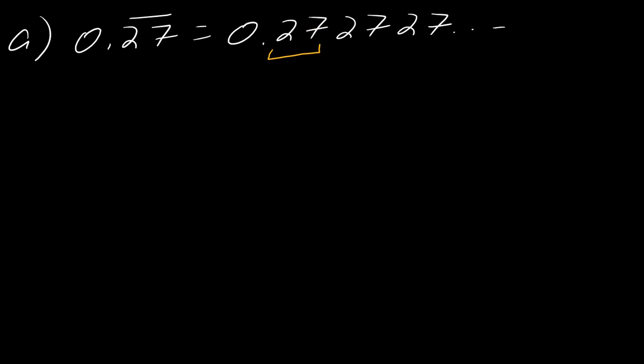If I wanted to express just this first part, this would be 27 over 100. And then what about here? So how would I represent this 27? So now this is tens, hundreds, thousands, ten thousands.